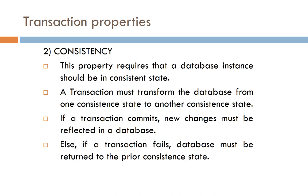The second property is Consistency. This property requires that the database instance should always be in a consistent state. A transaction must transform the database from one consistent state to another. If a transaction commits, the new changes must be reflected in the database; if a transaction fails, it must be returned to the prior consistent state.